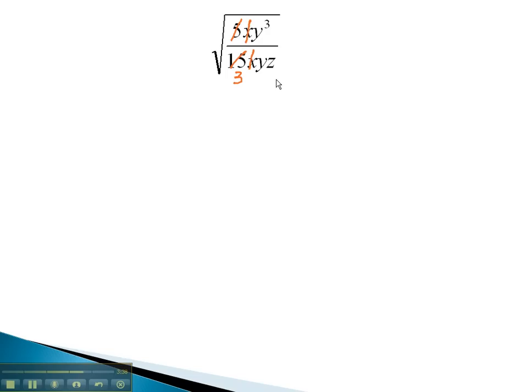The x's divide out completely, and the y divides with the y's cubed, leaving y squared when we subtract the exponents. We now have the square root of y squared over the square root of 3z. Again, we can simplify the y squared, pulling it out of the radical as simply y. Y over the square root of 3z.